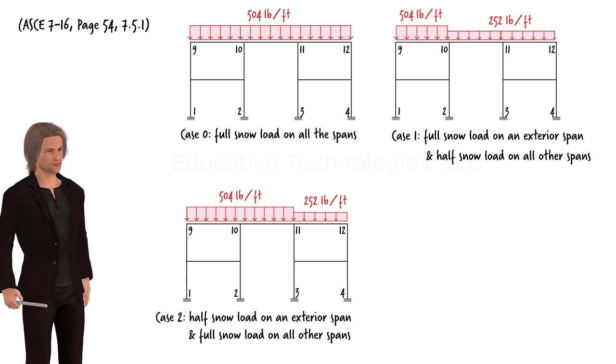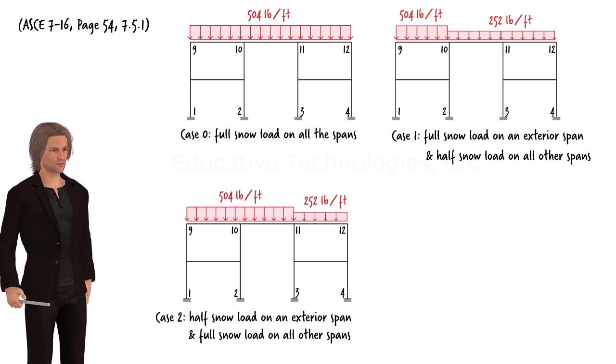ASCE 7-16 offers provisions for additional loading cases for sloped roofs. However, since the roof of the house in our example is flat, these cases are not applicable here. Therefore, the frame must be analyzed under three distinct loading cases.